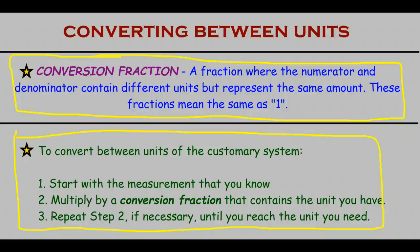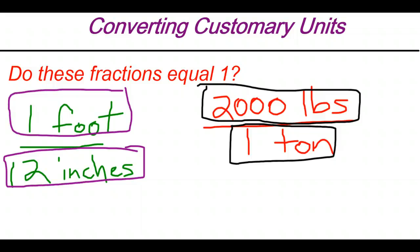Let's take a look back at the idea of a conversion fraction one more time. We said that 1 foot over 12 inches is the same as 1 — that's a conversion fraction. And 2,000 pounds over 1 ton — 2,000 pounds and 1 ton represent the same thing, so that's a conversion fraction too. In terms of converting, these equal 1. Now pause the video and see if you can come up with six more examples of conversion fractions — fractions where the numerator and denominator represent the same value with different units. Don't use the two we already did.